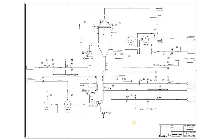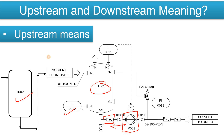Here is one P&ID with a control valve shown. Please let me know in the comments what will be the upstream and downstream of this control valve — that is the question for you all. I hope you now understand upstream and downstream. If you have any doubts, please let me know in the comments. Comments give us motivation to make more videos about industrial engineering, instrumentation, and process engineering. Thanks for watching — keep learning!